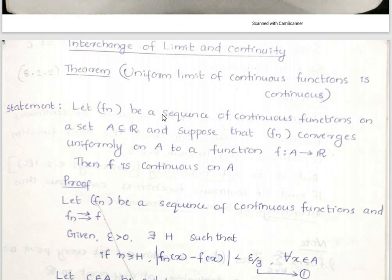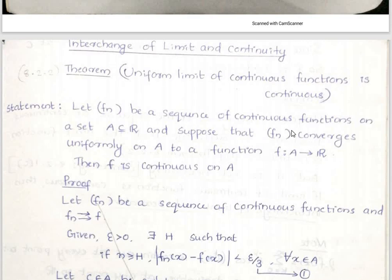Let the sequence fn be a sequence of continuous functions on a set A, a subset of R, and suppose that the sequence fn converges uniformly on A to a function f from A to R. Then f is continuous on A. So if the functions in the sequence are continuous and they converge uniformly, then the limit function f is also continuous.